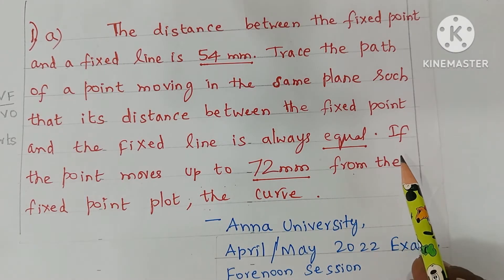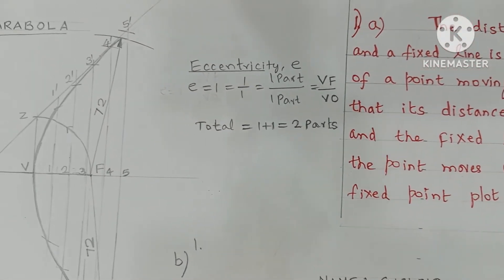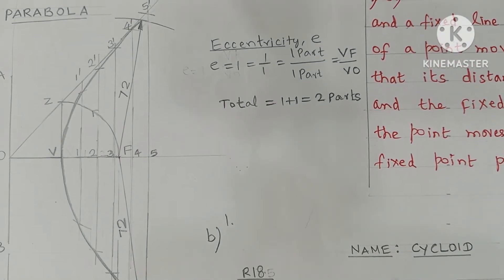Further you read the question. If the point moves up to 72 mm from the fixed point, plot the curve. So the answer diagram is parabola profile. Parabola is the answer diagram.